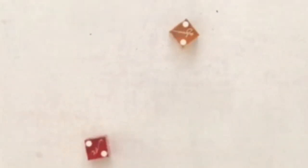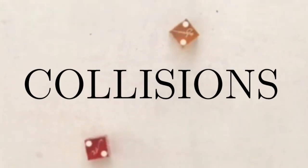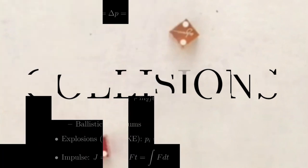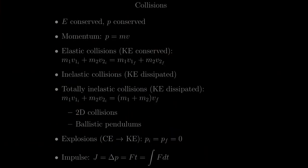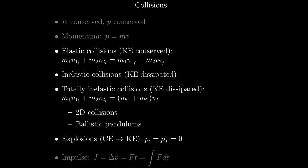Let's talk about what happens when objects collide. In all types of collisions, energy is conserved and momentum is conserved. The momentum of an object, p, is its mass times its velocity. There are four types of collisions: elastic collisions, inelastic collisions, totally inelastic collisions, and explosions.